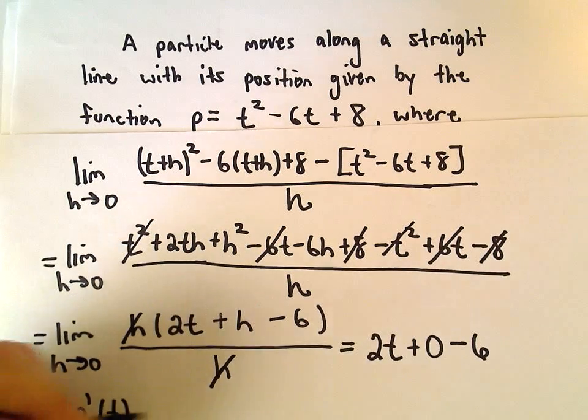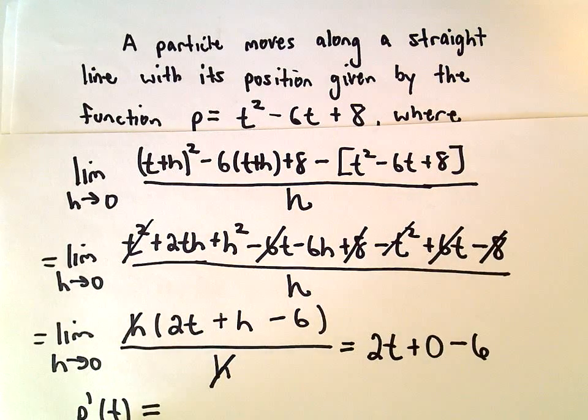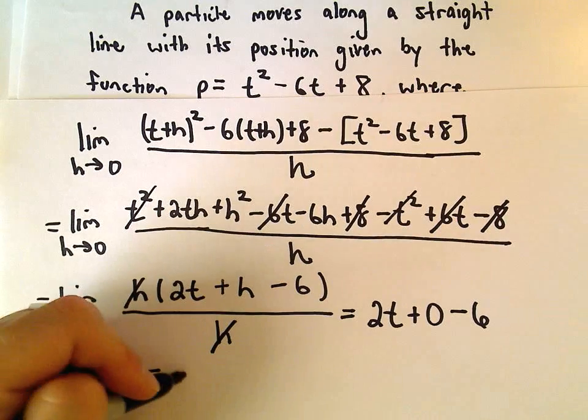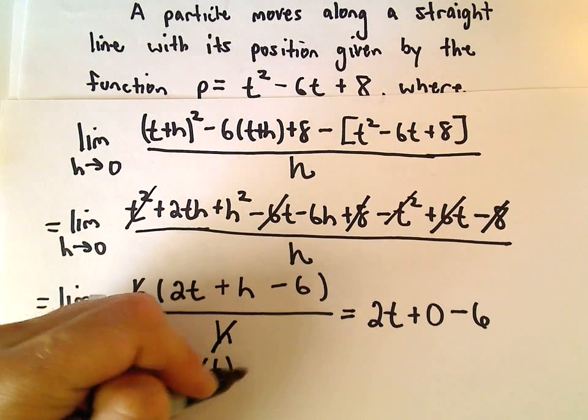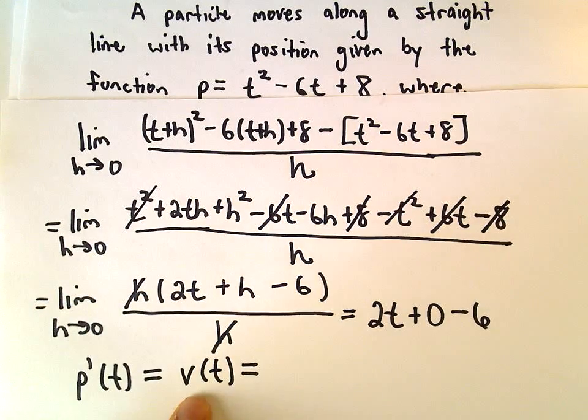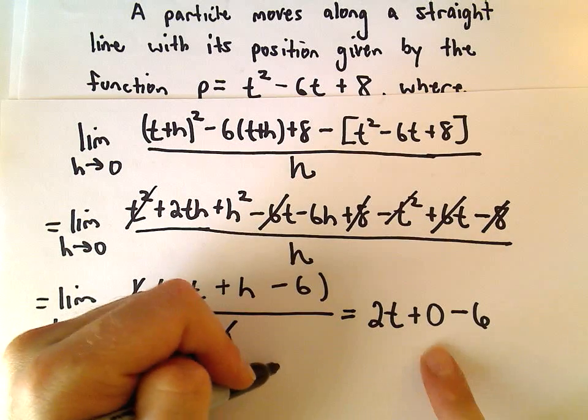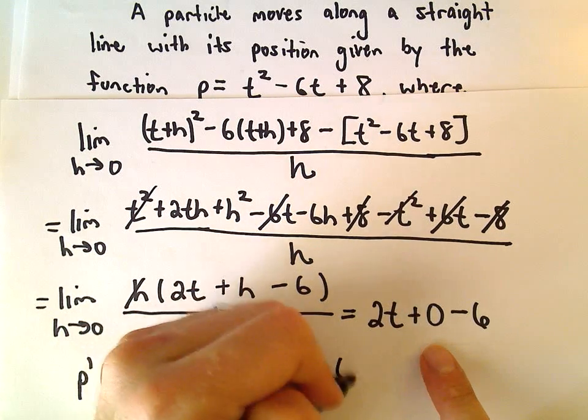Or we'll get our derivative, so p prime of t, but again, since our derivative is the derivative of position, we can also call this the velocity function. So it says the velocity at any time t will be 2t minus 6.